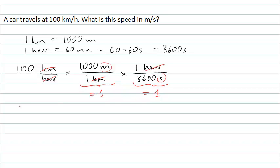So, the calculation that I actually do is 100, which was how many kilometres per hour I had, times 1000 divided by 1, and of course you might ignore that 1 on the bottom line, but we'll leave it there for the moment, times 1 divided by 3600.